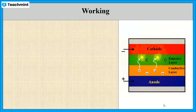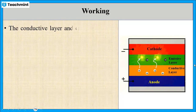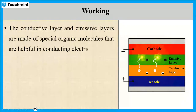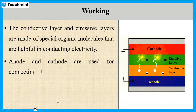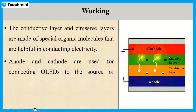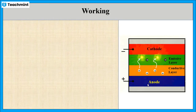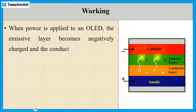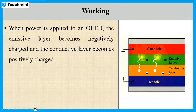Now let us see the working principle of OLEDs. It contains an emissive layer and a conductive layer which are made up of organic molecules. These two layers are sandwiched between a cathode and an anode. When power is applied through these two electrodes, the emissive layer becomes negatively charged and the conductive layer becomes positively charged.